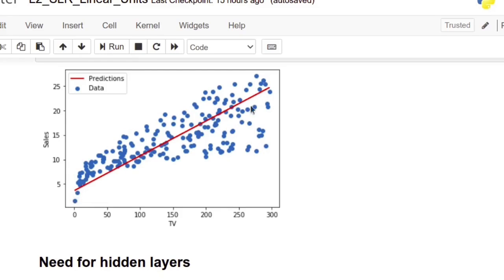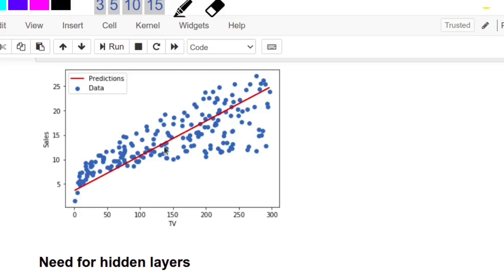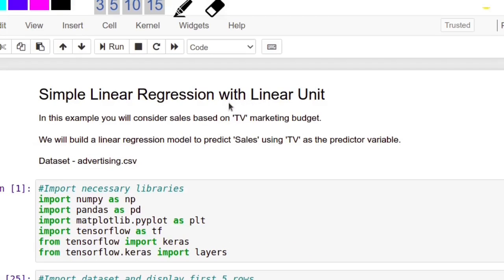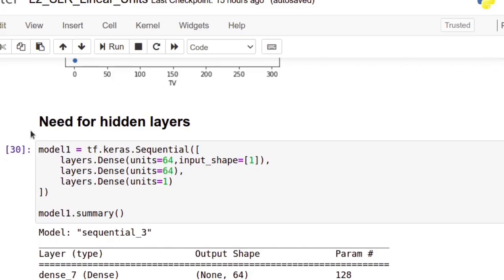See here, predicted data on the straight line. But see here, our data is little bit non-linear. Linear units can capture only linear relationship among data. Suppose the original data is like this curve, this relationship cannot be modeled using linear units. Linear units can capture only linear relationships. Don't bother about the code here. Let us see what type of relationships can be modeled using linear units. In next class, we will see how hidden layers will be useful to capture more complex patterns in the data.